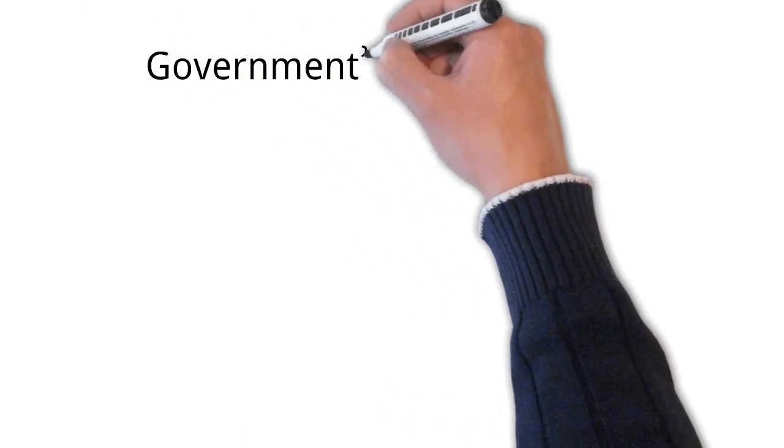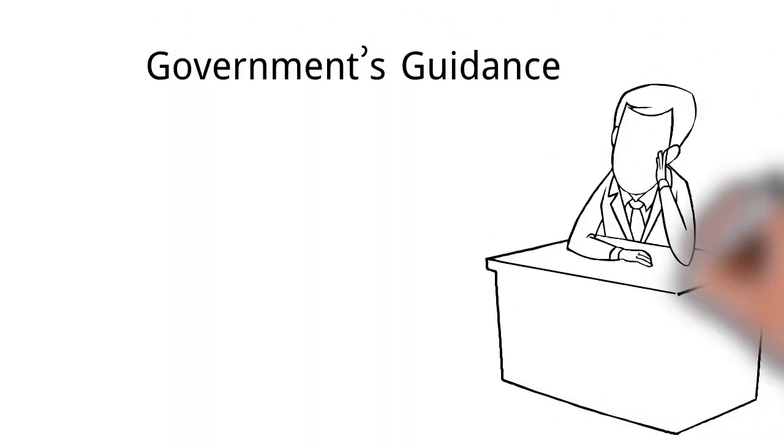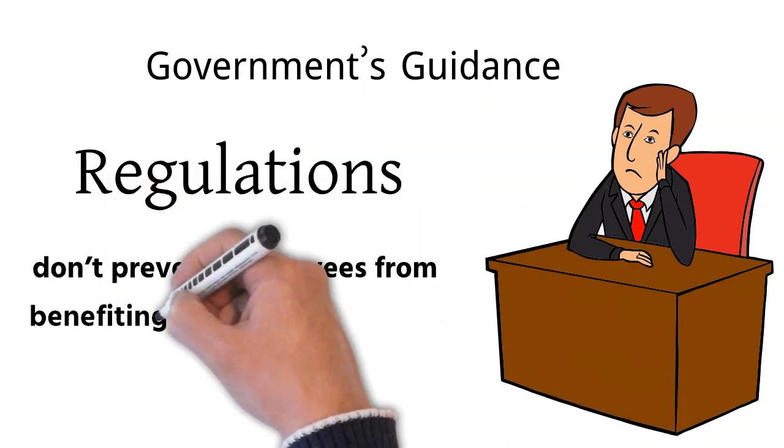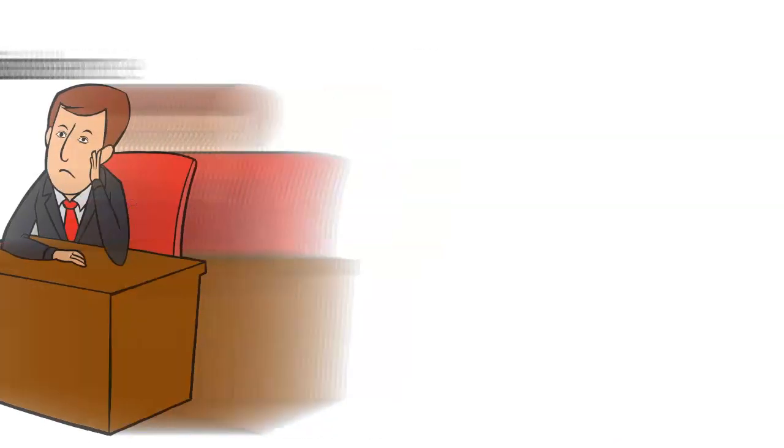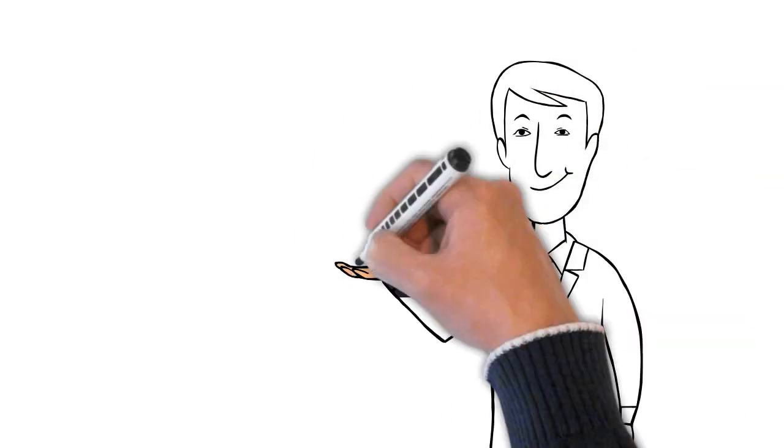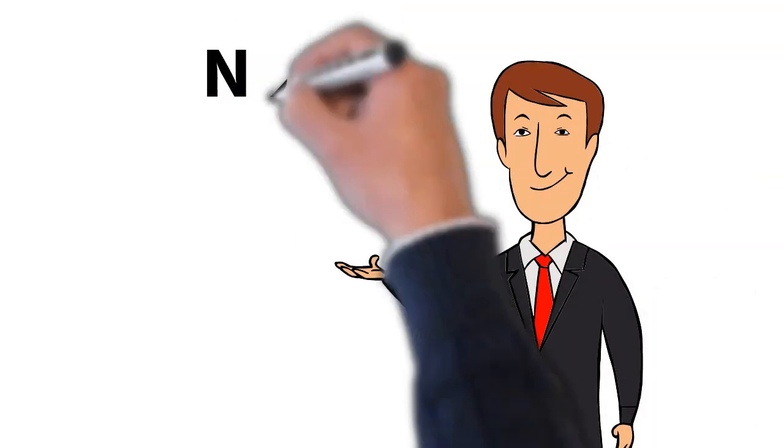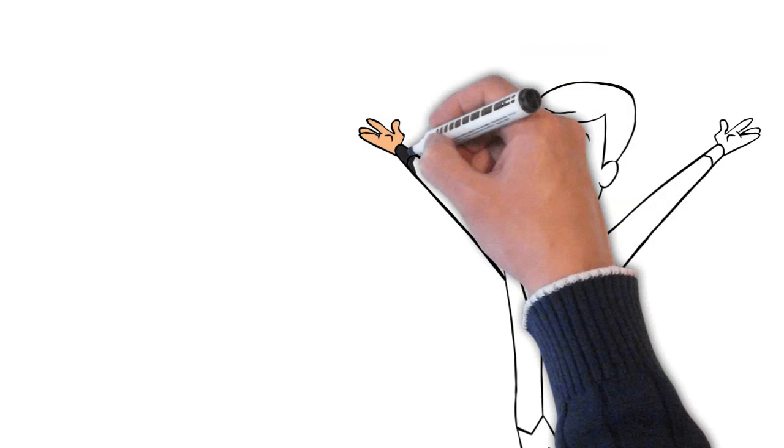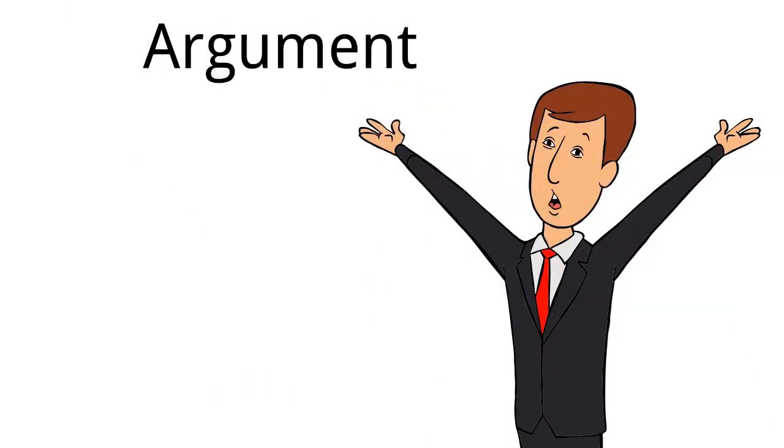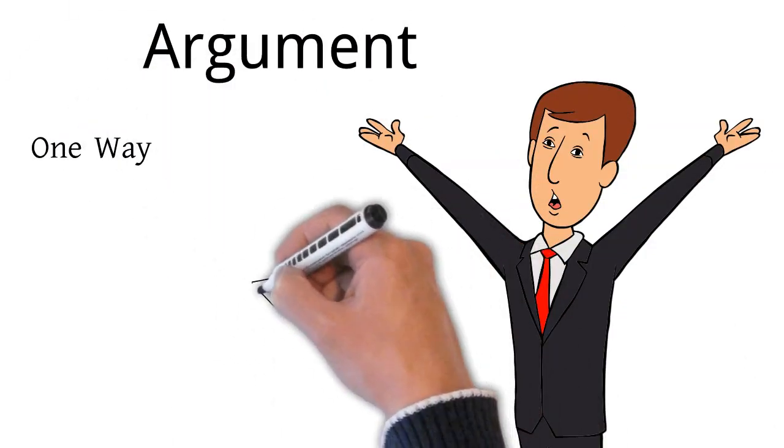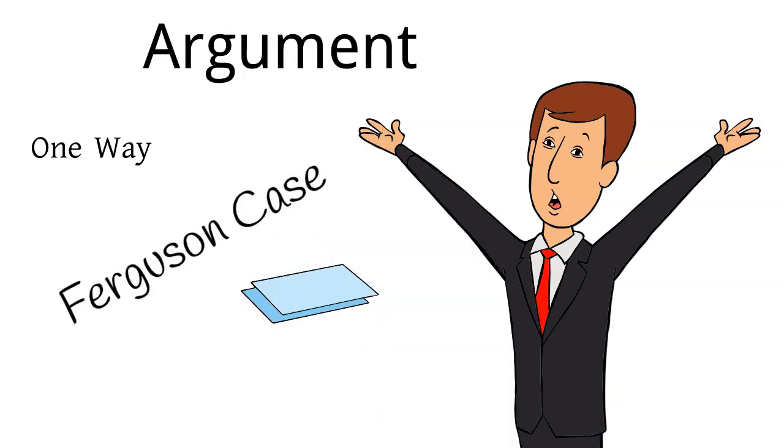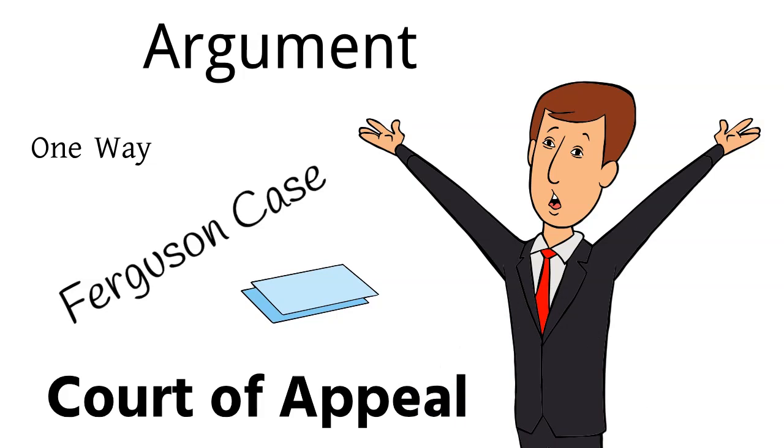It is worth noting the government's guidance on TUPE states clearly that the regulations don't prevent employees from benefiting from improvements in their terms and conditions. Now, the EAT pointed out in Ferguson that the guidance has no legal effect and it was inconsistent with the wording of the regulations themselves. Nevertheless, it's clear this argument is likely to raise its head again. It went one way in Power and Regent Security, it went another way in Ferguson and maybe the Court of Appeal needs to look at this issue.